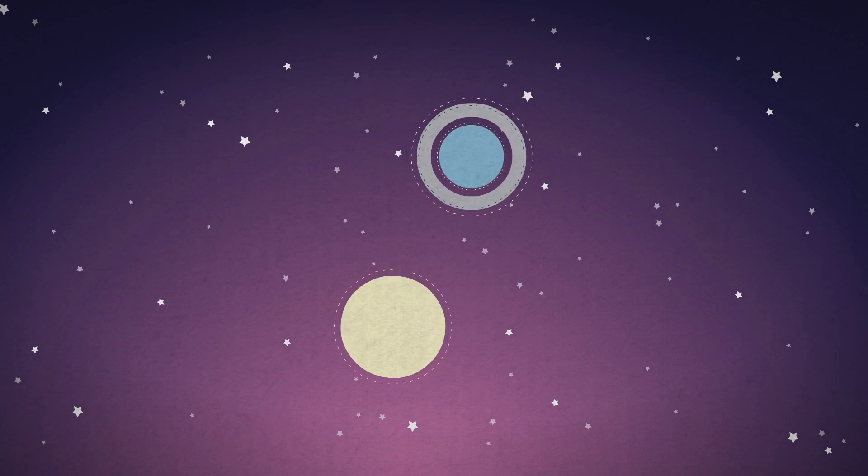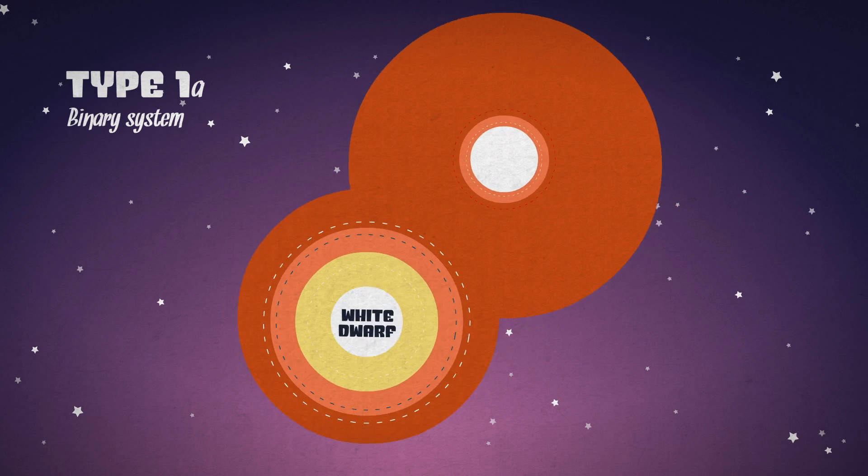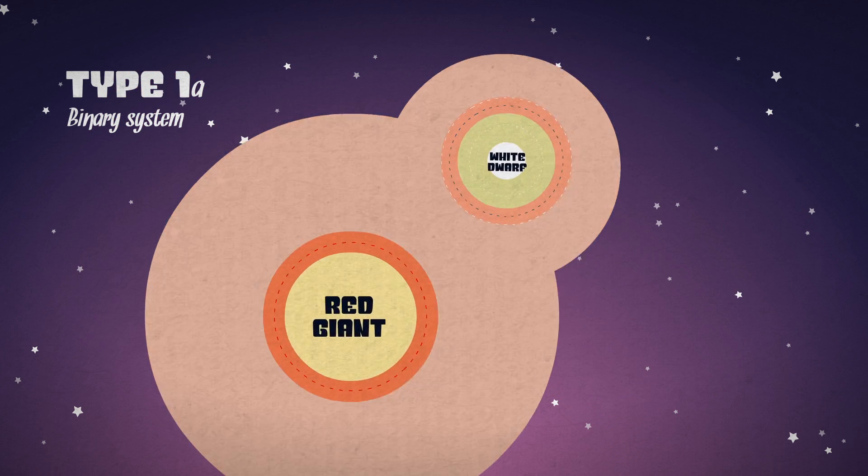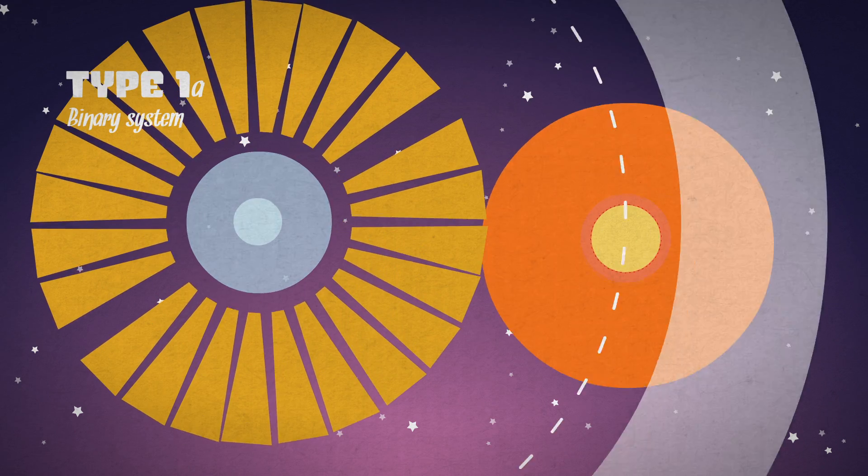Here's why. There are two types of supernova. Type 1 is when a star accumulates so much matter from a neighboring star that a runaway nuclear reaction ignites and causes it to explode.